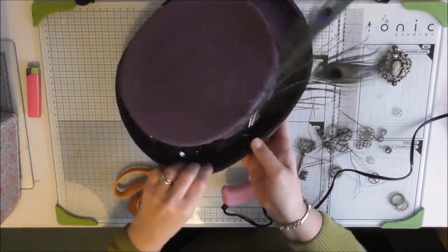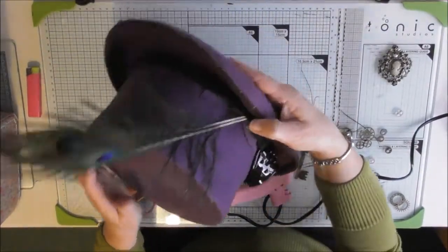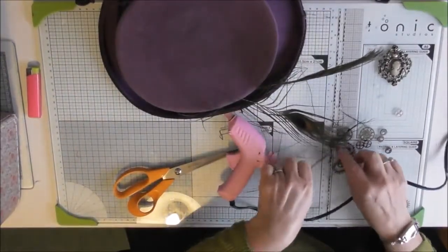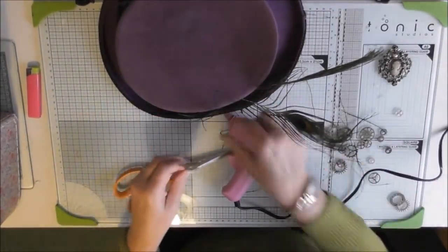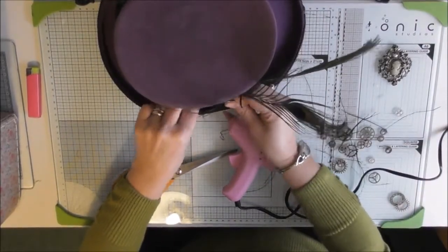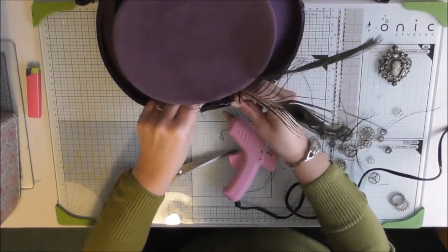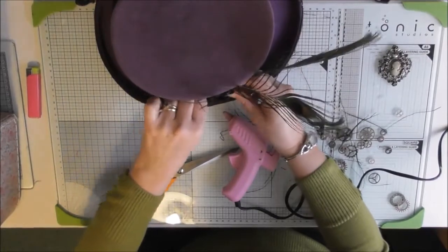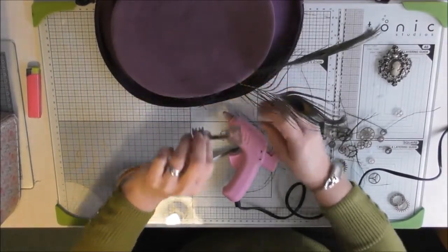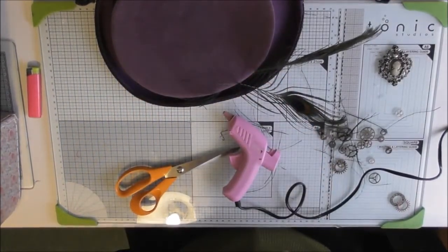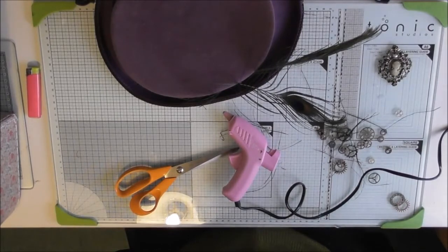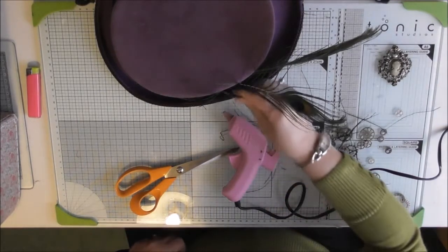I quite like that, can you see? So across where the peacock feather joins I'm going to add my key across it. So I just need to bend it a bit, just so it sits nicely.